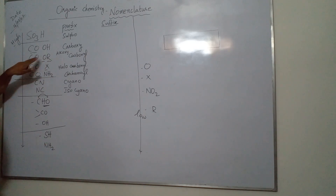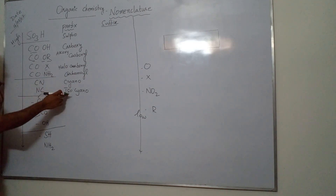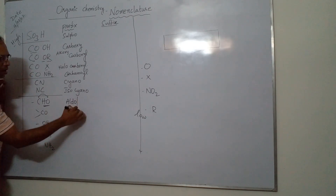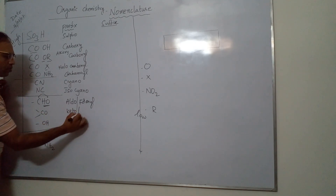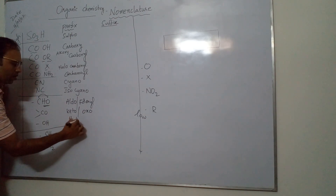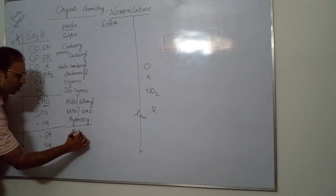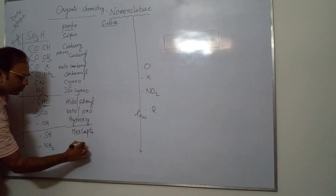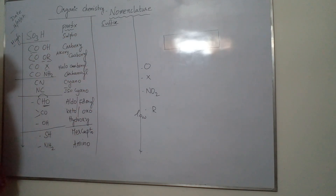Continuing the prefixes: for CHO the prefix is 'formyl' (also called 'aldo'). For the ketone C=O it is 'keto' or 'oxo'. For OH it is 'hydroxy'. For SH it is 'mercapto'. For NH2 it is 'amino'. So we have now written all the prefixes for the functional groups in the priority list.